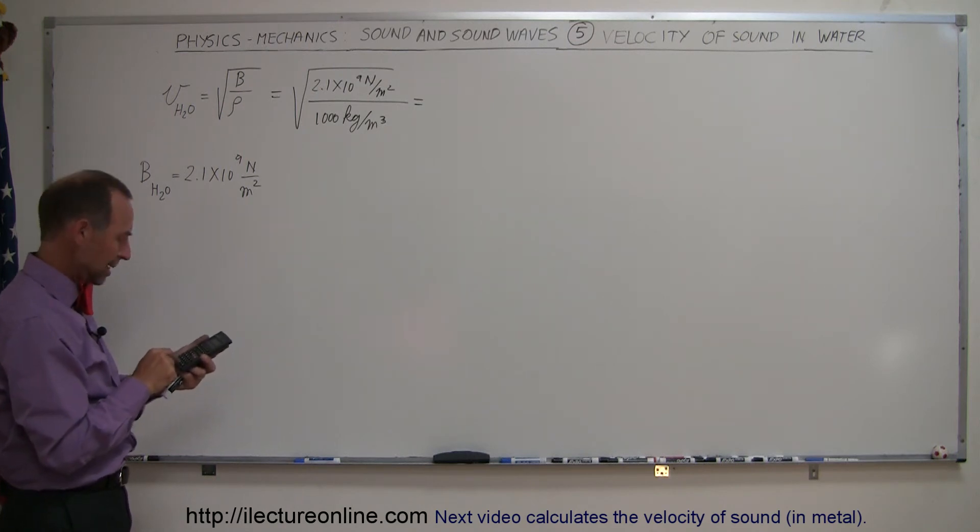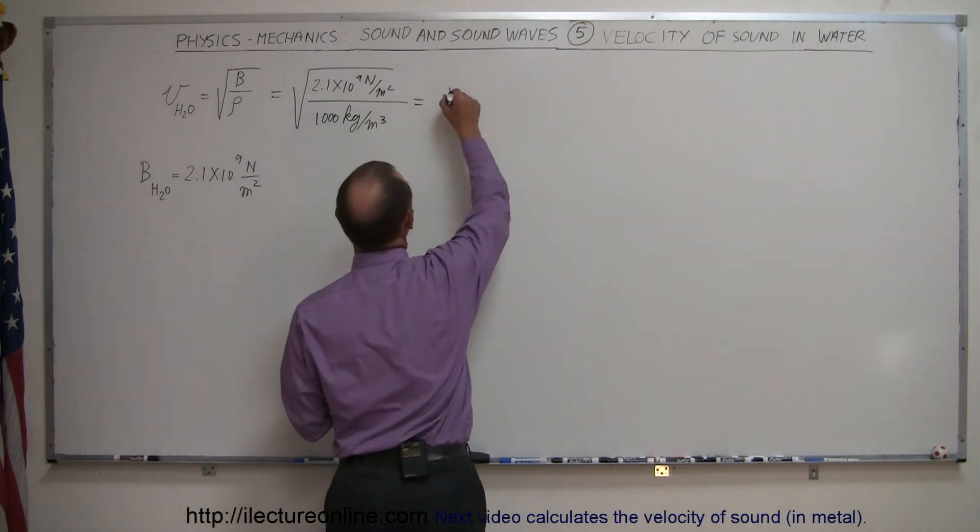So we have 2.1 e to the 9th power divided by 1000, and then taking the square root, and we get 1449 meters per second.